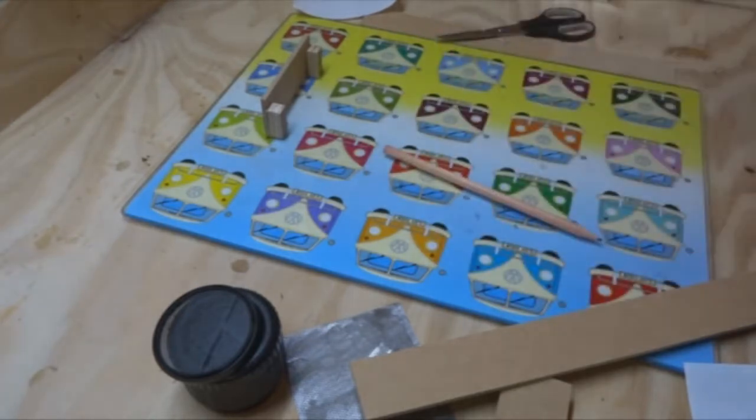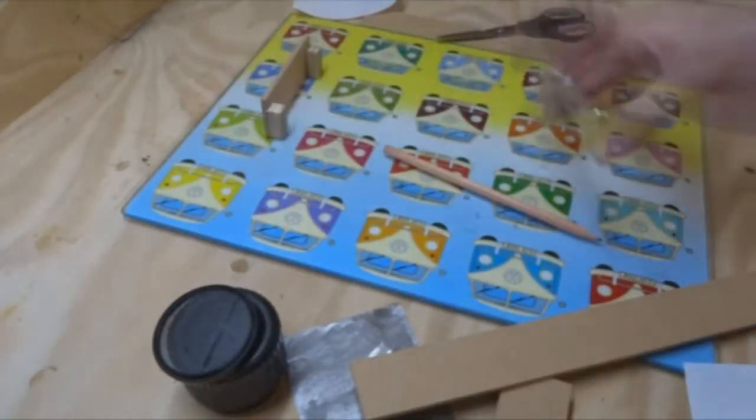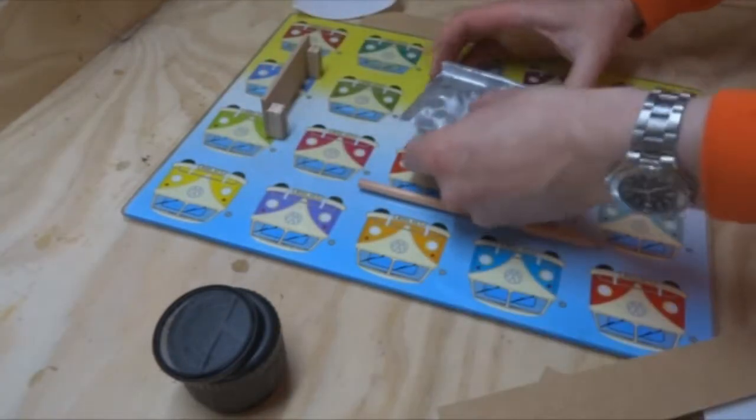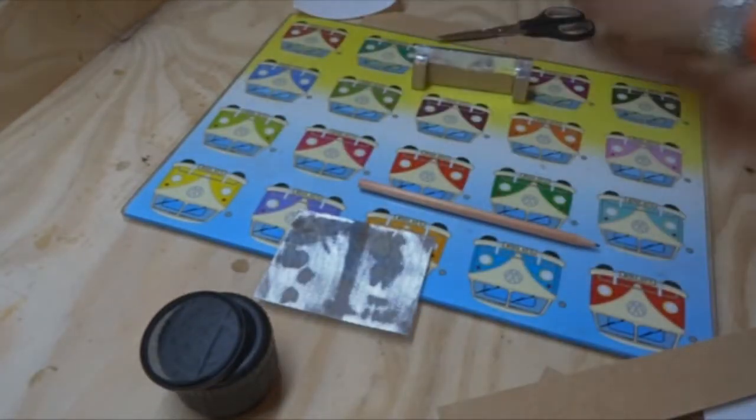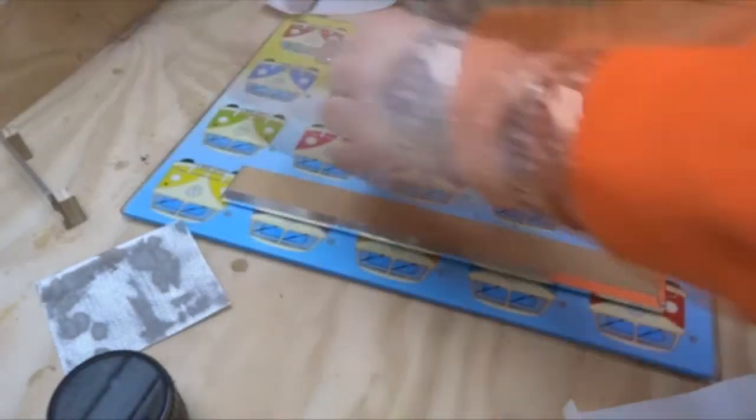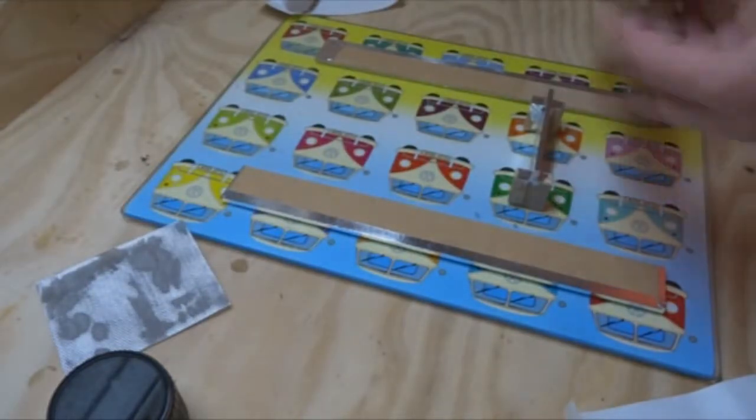So, I'm wrapping that over, and then just using the end of a pencil to burnish it flat, and that's one piece done. I'm now just going to do all the other pieces, which are now done, and we're going to assemble this, again, just using super glue.